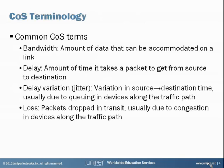A couple of common terms you should be aware of for class of service. The first is bandwidth — a 10 megabit link, a 50 megabit link — it's the amount of data that you can fit on a particular link. Delay is the next one: the amount of time it takes for a packet to get from its source to its destination. A related item is delay variation, which is also called jitter — that's the variation in the delay time across the network from source to destination. This can impact the quality of your application in a great way or really no way at all, depending on the application.